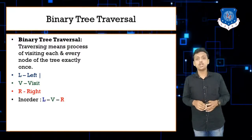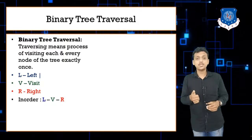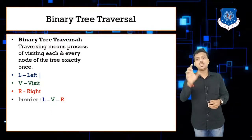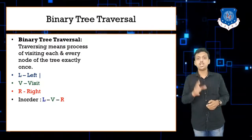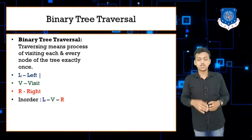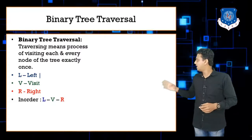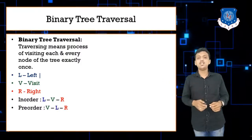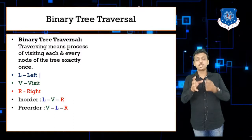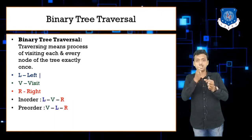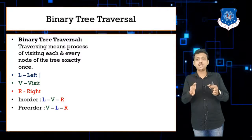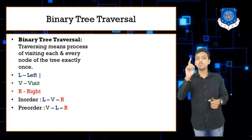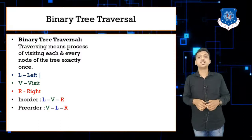First is in-order. V stands for visit — you are visiting a node in between the elements, so that is known as in-order. The name shows how we are visiting the nodes: L, V, R — left, visit, then move towards the right side. Then we have pre-order. In in-order, V is in between L and R. In pre-order, V is first — you need to first do visit, then go left, then right.